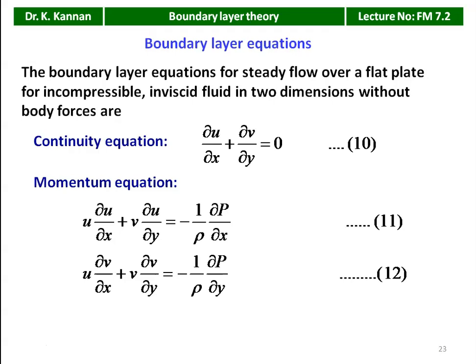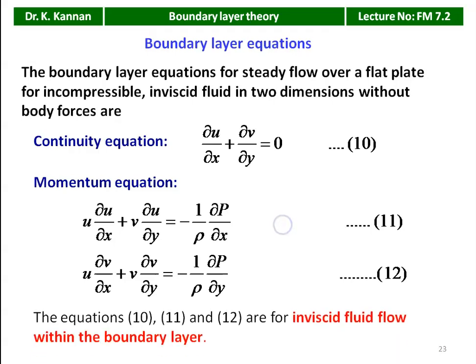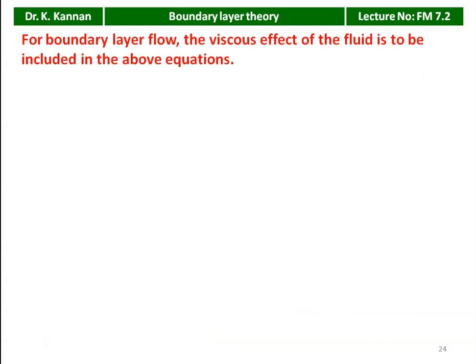The y-momentum equation: u·∂v/∂x + v·∂v/∂y = −(1/ρ)·∂p/∂y. These equations represent inviscid (non-viscous) ideal fluid flow. In the boundary layer, the viscous effect of the fluid must be included. In the above inviscid equations, the viscous force term is not considered.